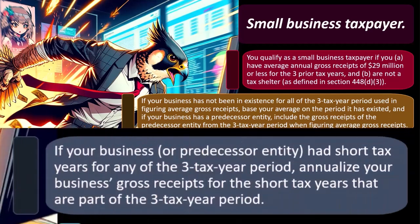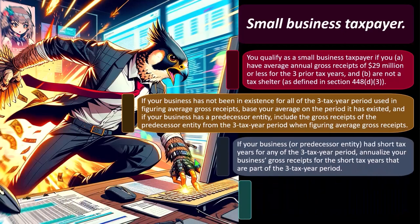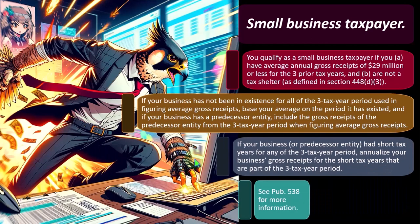If your business or predecessor entity had short tax years for any of the three tax year period, annualize your business gross receipts for the short tax years that are part of the three tax year period. What if one year was the first year of business and you were only in business for half the year? Well, then you would expect the business income for that year to be much lower, which would throw off the average. So you would have to annualize that one year that was a half year, so it would be equivalent to a full year, so you can get an accurate average of a three-year timeframe.